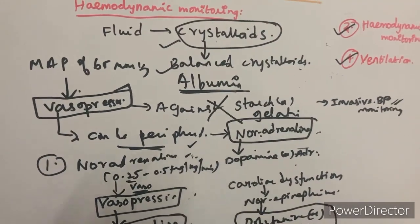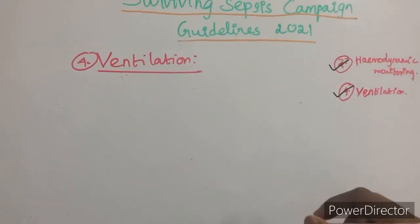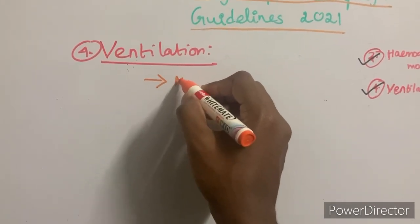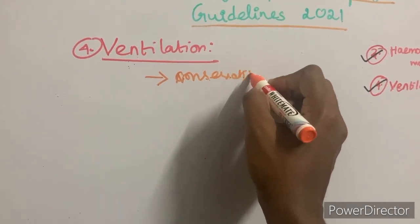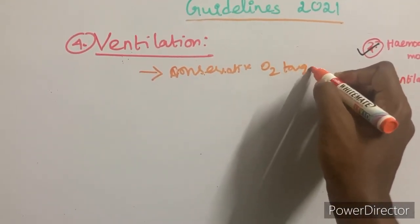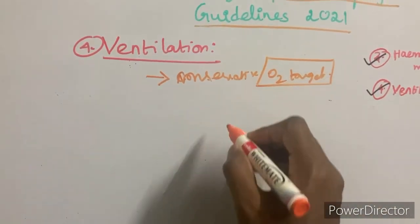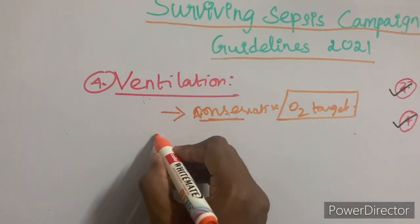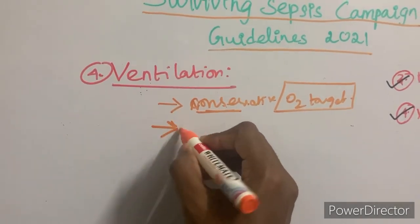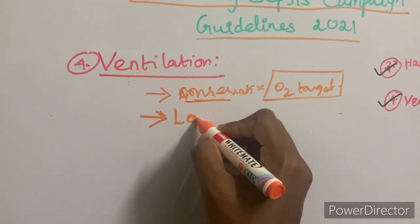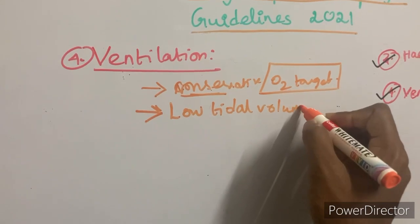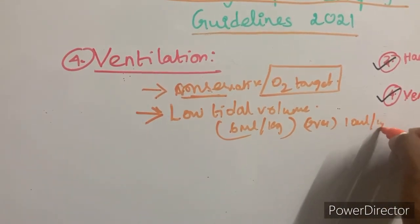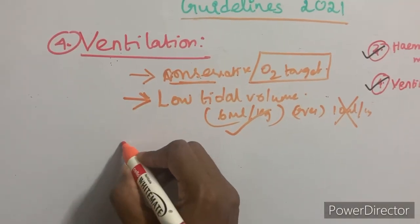Moving to the ventilation part: in sepsis patients with hypoxemic respiratory failure, there is insufficient evidence to define a specific oxygen target for PaO2 or FiO2. However, if the patient is intubated, low tidal volume ventilation of 6 mL/kg is recommended over high tidal volume of 10 mL/kg.